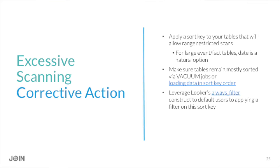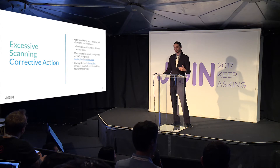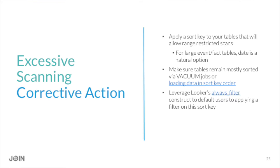The corrective actions here generally involve a sort key, which allows Redshift to skip scanning parts of the table irrelevant to your where clause filter. For large event tables, that's very commonly a timestamp column. In Redshift you declare the sort key, then keep the data sorted over time by running a vacuum job, or by using Redshift's feature to keep data sorted as new sorted data is appended. In Looker, you can use the always_filter property on an explore to ensure users default to a date range like the past seven days rather than hitting all historical data.